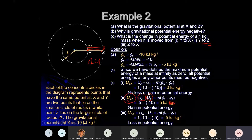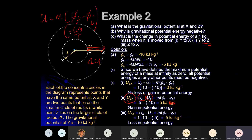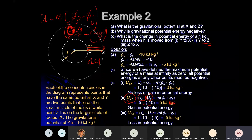Remember: whenever you calculate potential energy, the formula is mass × (final potential – initial potential). The potential is –GM/r — please include the negative. Don't forget the negative, otherwise the calculation will be wrong. So a negative of a negative –10 becomes +10.